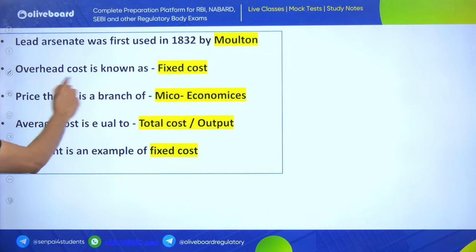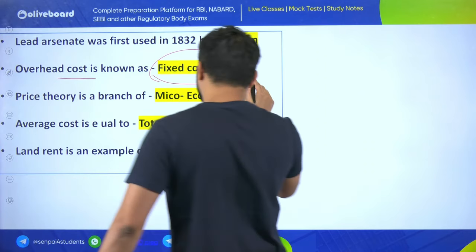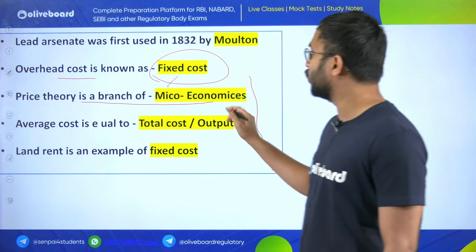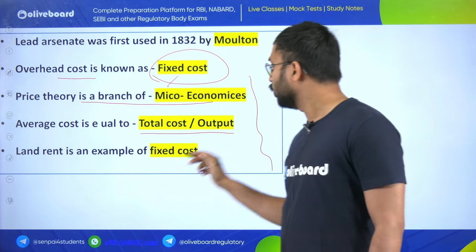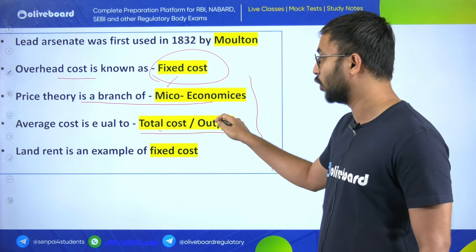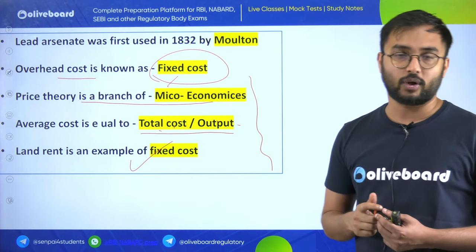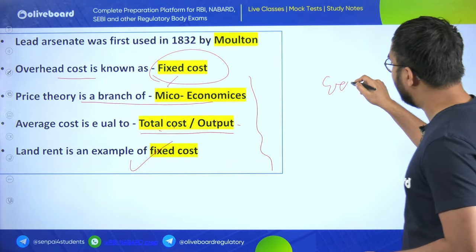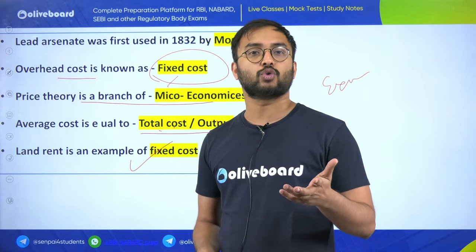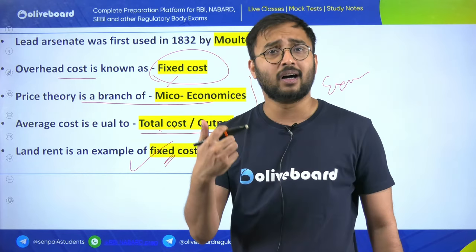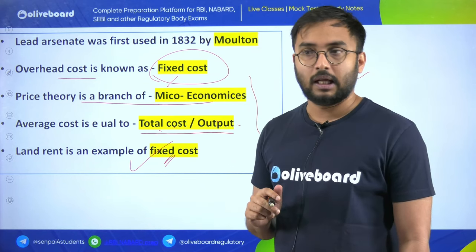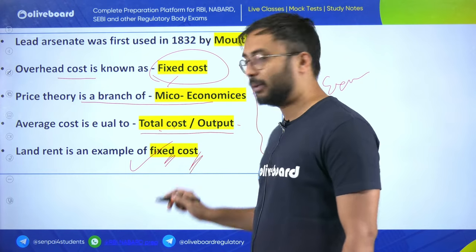Overhead cost is also known as fixed cost. Price theory is a branch of microeconomics. Average cost is total cost divided by output. Land rent is an example of fixed cost. Fixed cost is the expense that doesn't change regardless of production - examples include wages, salary, and rent.